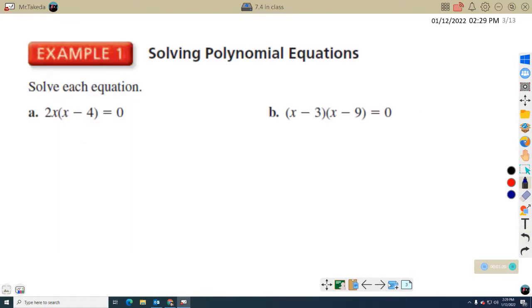Let's talk about these examples here. Now, these examples, these are polynomial equations, but they're not written like you normally think of polynomials. I'm going to rewrite this a little bit bigger here. 2X times the quantity X minus four equals zero.